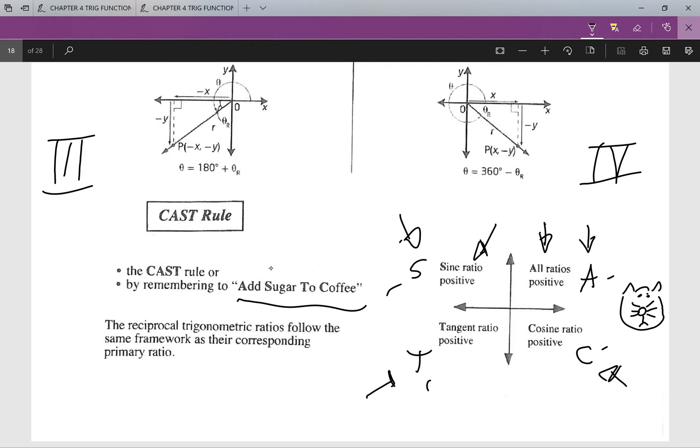In this quadrant right here, only sine is positive. So sine and cosecant are positive, but cos, tan, secant, and cotan are all going to be negative.